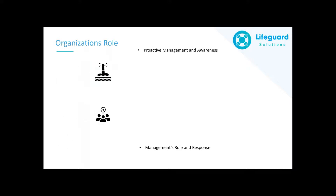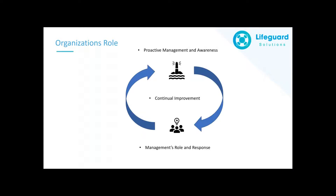You have your proactive and reactive side, and your continual improvement happening between the two individual sides of the applications. But first, we're going to take a look at management's role and response. If something were to happen, what does that look like in the system? How do I go through and record that level of information? And how do I make sure that it's getting actioned at the right times to the right people? Let's hop into the application and see what that looks like.